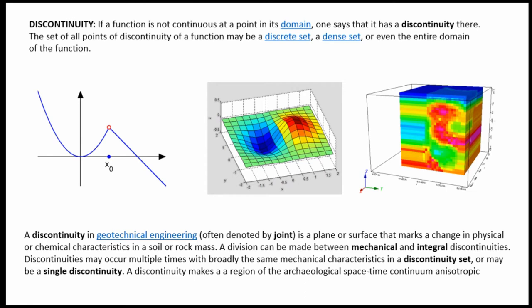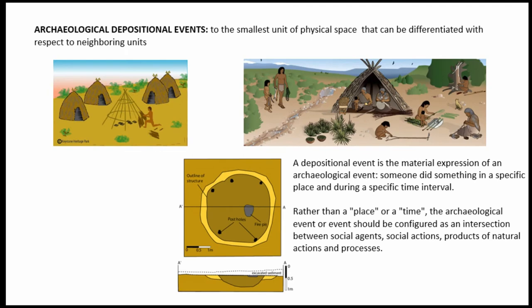Social actions generate transformations in the surface of space, and those transformations allow us to distinguish between areas. This is not just a question of technically detecting discontinuities, but understanding that some action produces some result. As a result, the neighboring area will be completely different because this action was not taking place on that part of the site.